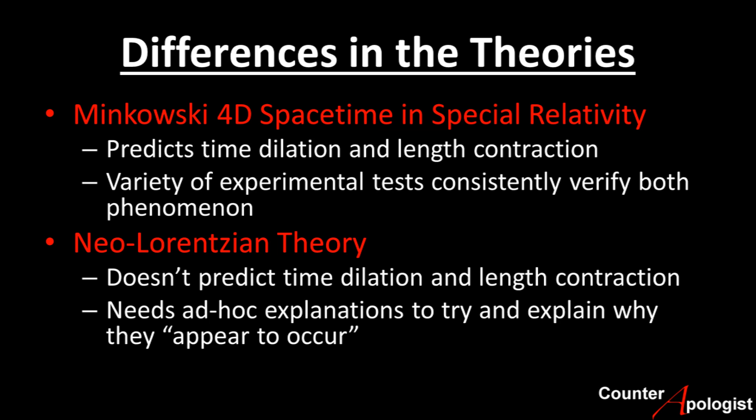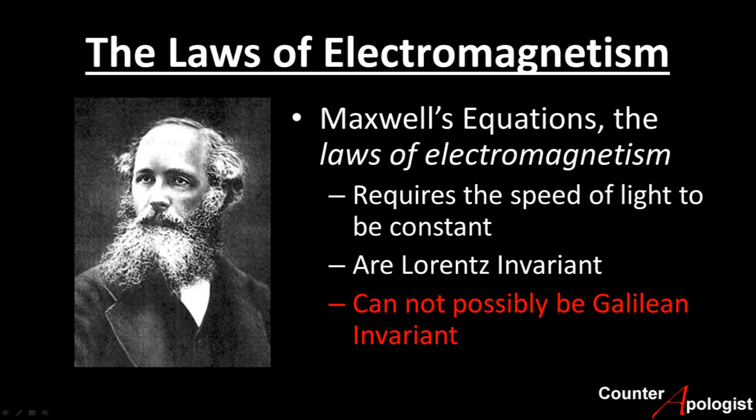However, we don't just have experimental evidence against the Neo-Lorentzian view — we also have a strong theoretical basis for rejecting it, thanks to the laws of electromagnetism and the great scientist James Clerk Maxwell, the man Maxwell's equations are named after. Maxwell's equations showed two important things that led Einstein to develop special relativity. First, they showed that the speed of light in a vacuum, C, is a constant — even before we knew it represented the speed of light, it had to be a constant for mathematical consistency in Maxwell's equations.